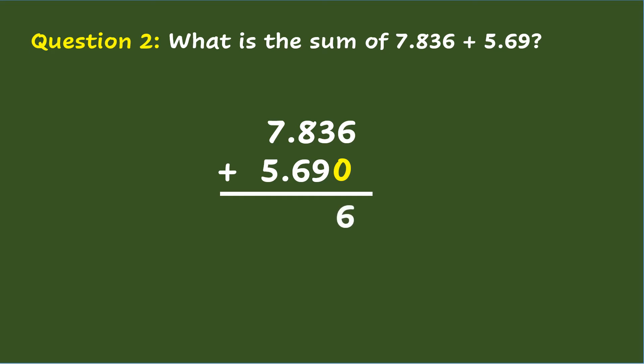Next, three plus nine equals twelve. But since the answer is more than ten, you will regroup ten to the next place value, which is equivalent to one tenth. Then one plus seven plus five for the whole numbers is thirteen. Make sure to bring down the decimal point in the answer. So the final answer is thirteen and five hundred twenty-six thousandths.